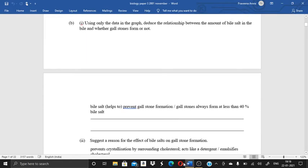Part B is, using only the data in the graph, deduce the relationship between the amount of bile salt in the bile and whether gallstones form or not. So over here I have given even the answer. You can just check out the answer. If something is not clear to you, you can comment us in the comment box and definitely I will revert you back and I will solve your problems.